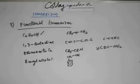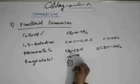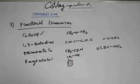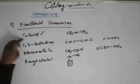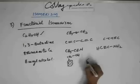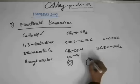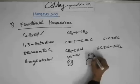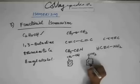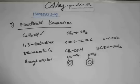Now you have to get a functional isomer of this benzyl alcohol. For a functional isomer, you have to change the functional group. This is alcohol, and by changing the functional group you can have an ether. So one of the obvious functional isomers you can draw for benzyl alcohol is methylphenyl ether.